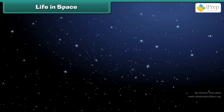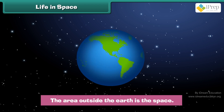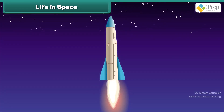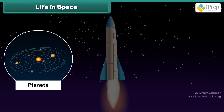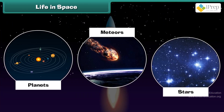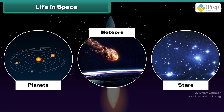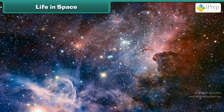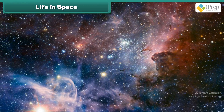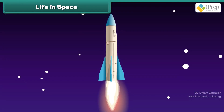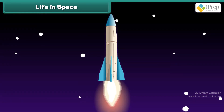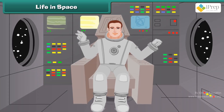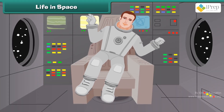The area outside the Earth is space. In space, there are various celestial objects, like planets, meteors, stars, and more. Space is a quiet place. There are many astronauts who have been to space. An astronaut is one who is properly trained to travel to space by spacecraft. Things float in space as there is no gravity.